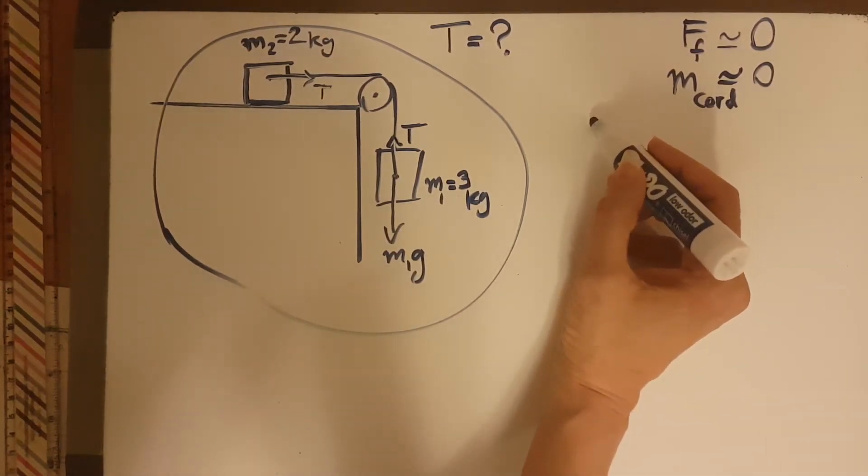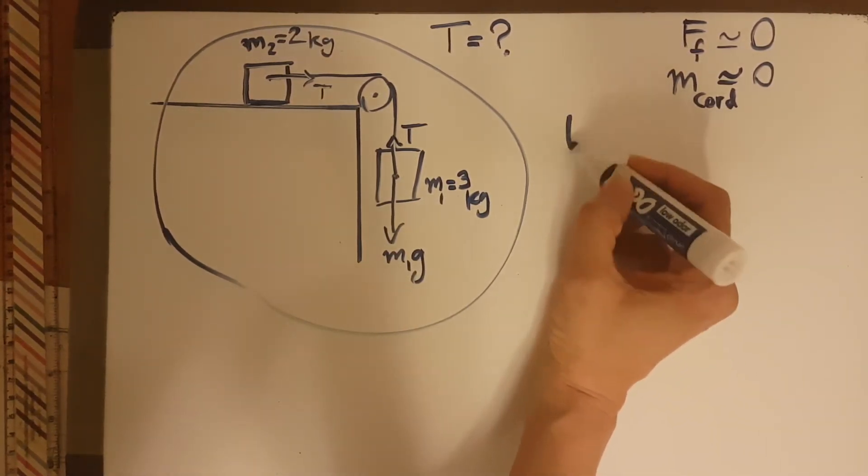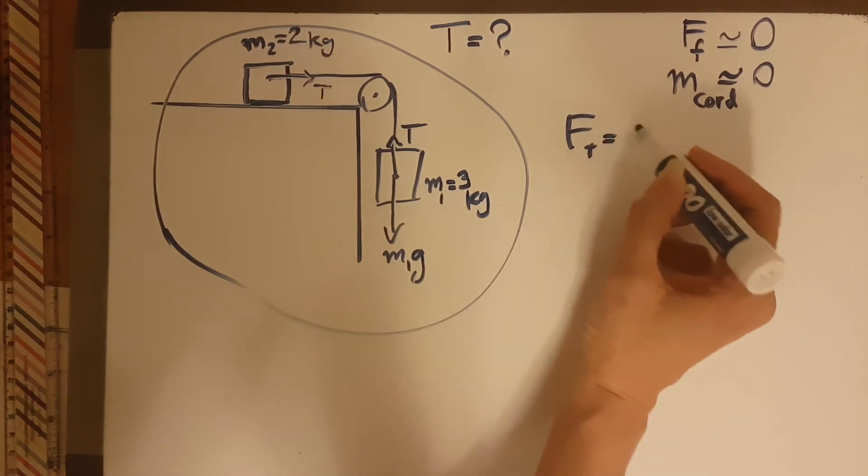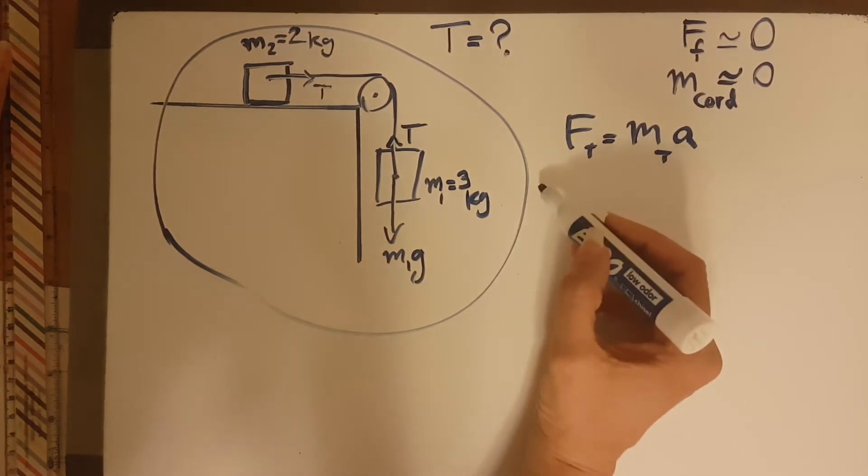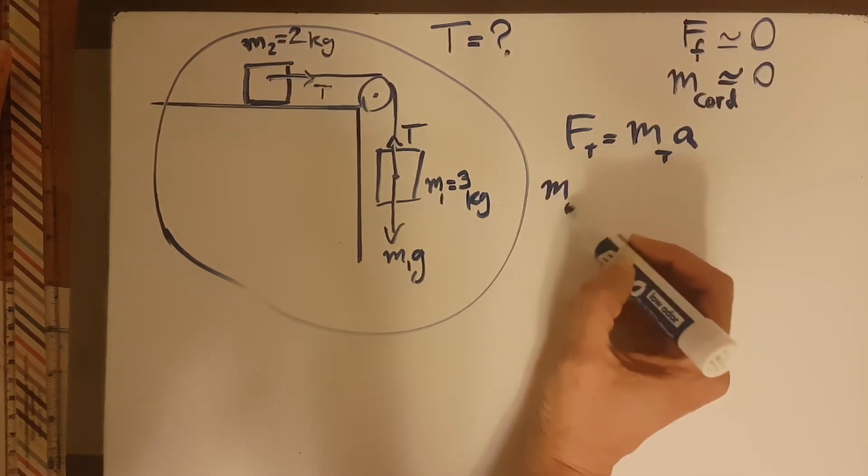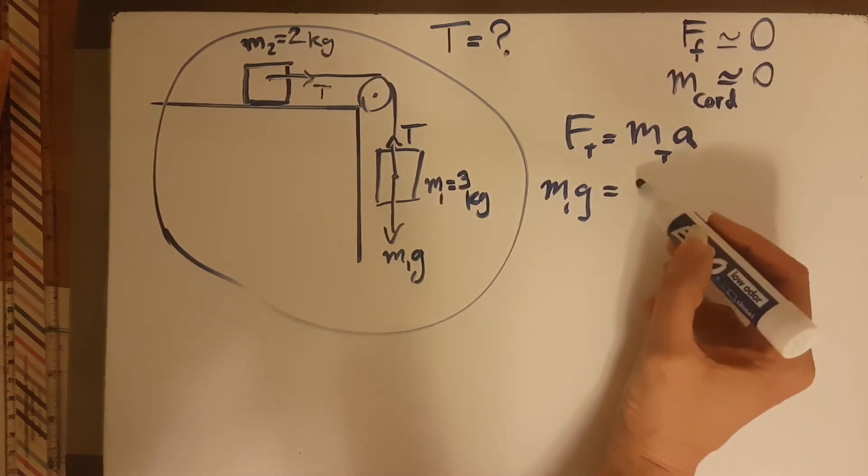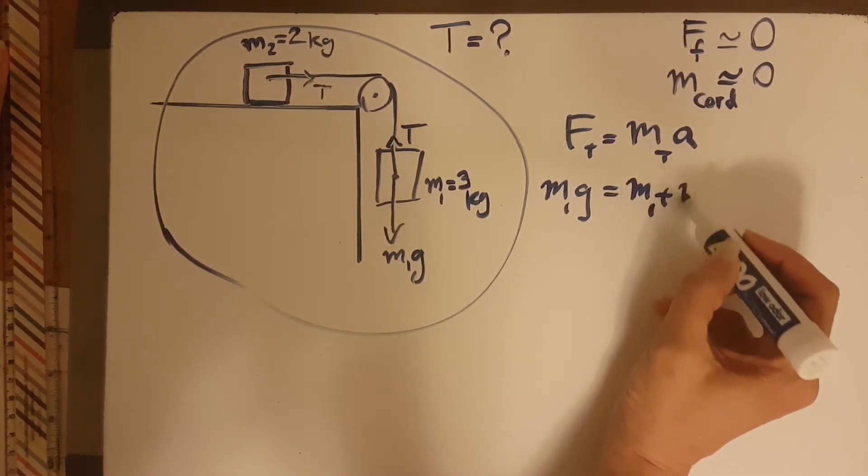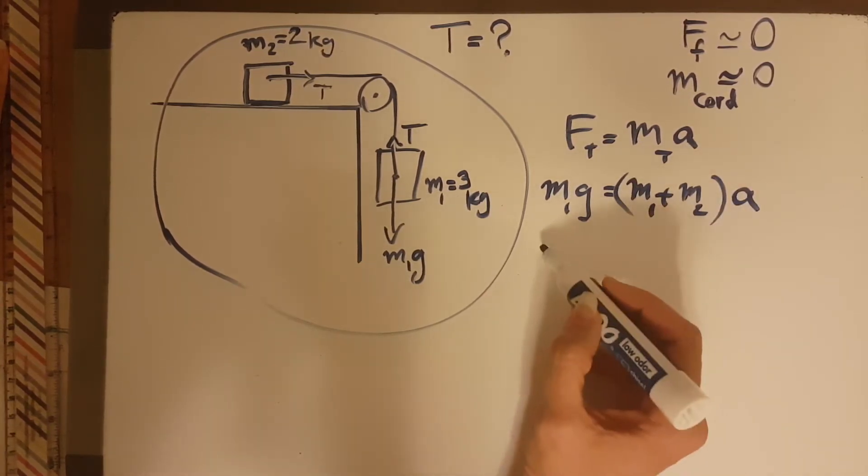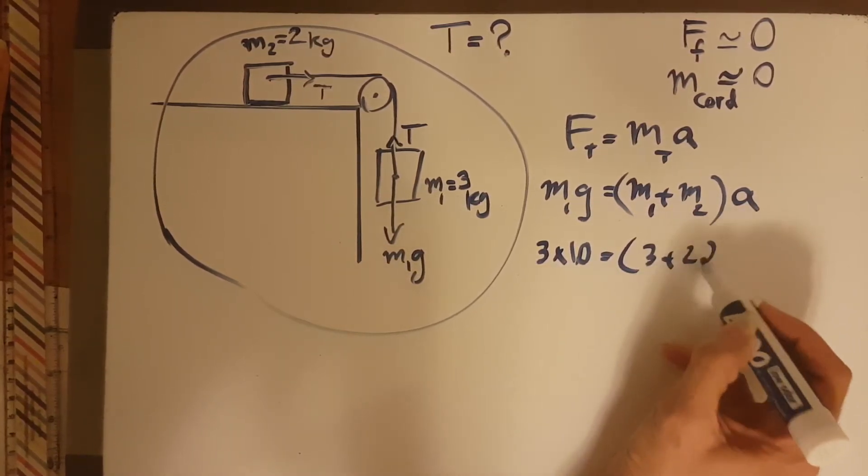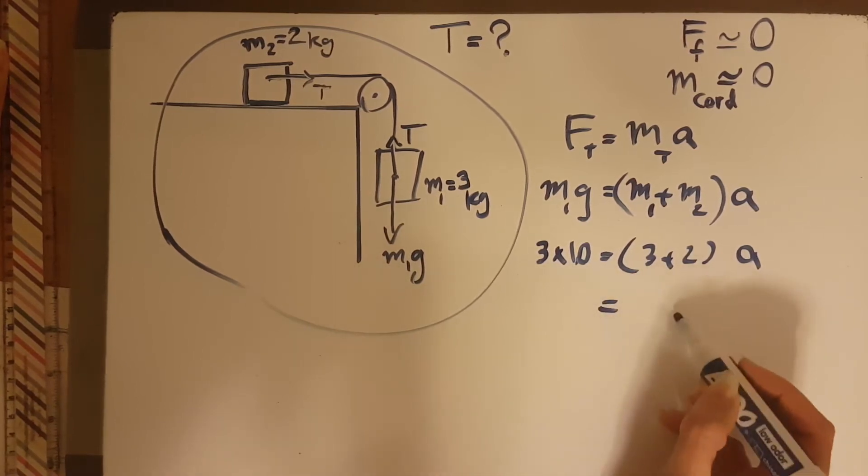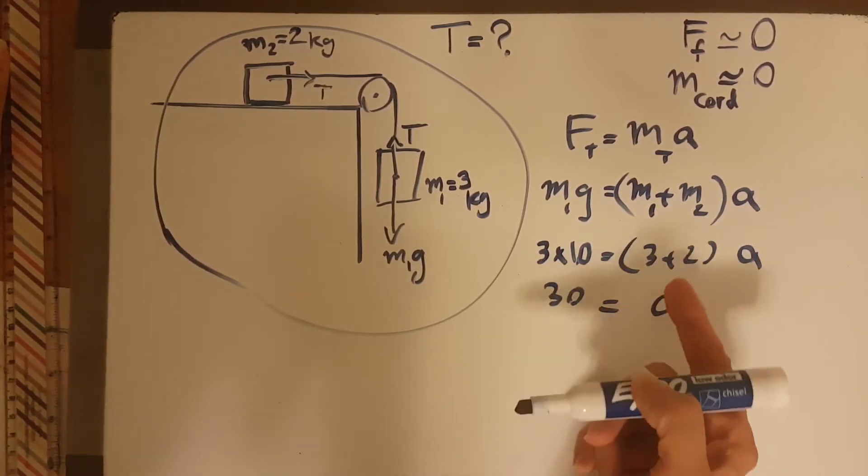So the total force, F_total equals M_total times A. The force total would be M1G because the T's are canceling each other. M1 plus M2 is the M_total times A. Substitute: 3 times 10 equals 3 plus 2 times A, so the A would be 30 over 5.